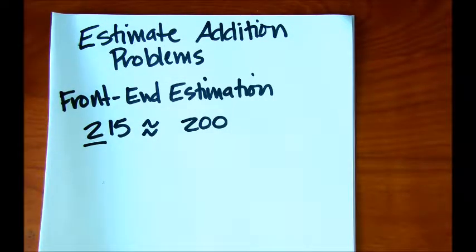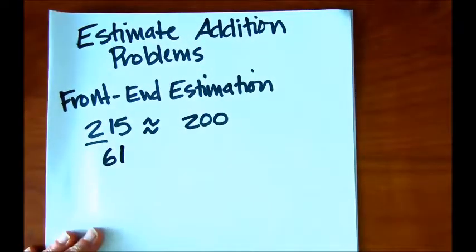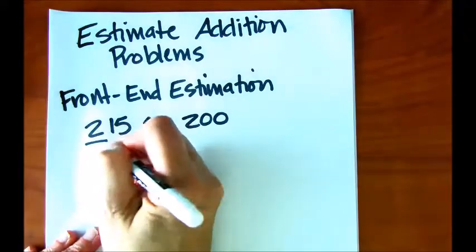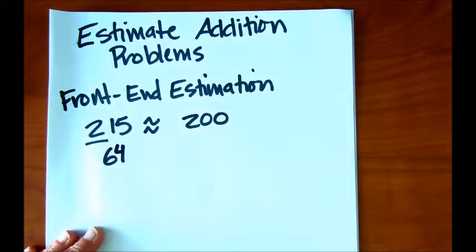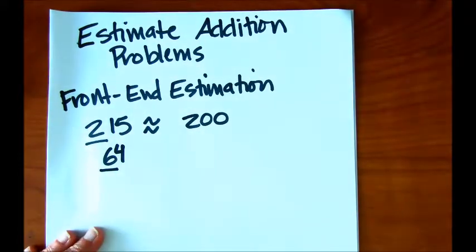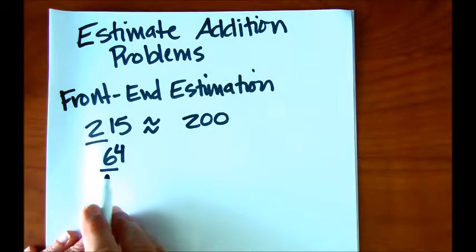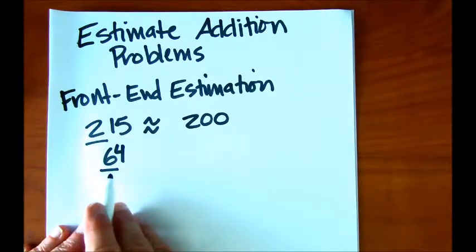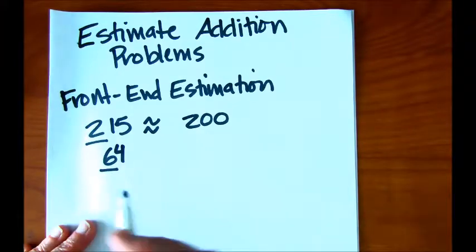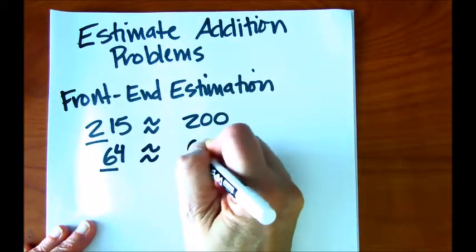Let's try one more. Let's say we have the number 64. The front number's in the tens place. If we want to round this, we're going to round to the nearest tens. That's going to give us 60.